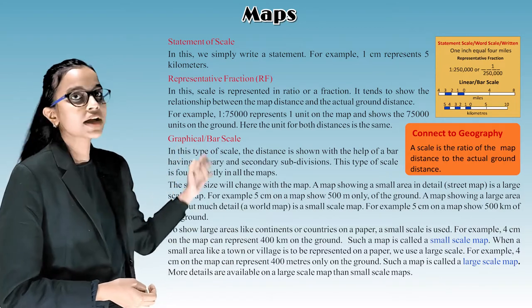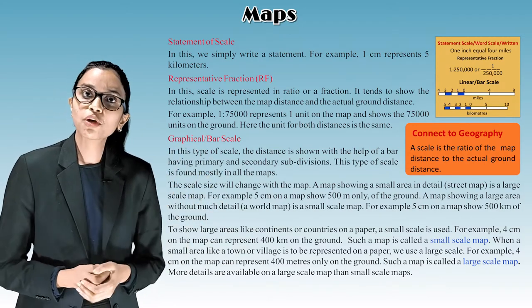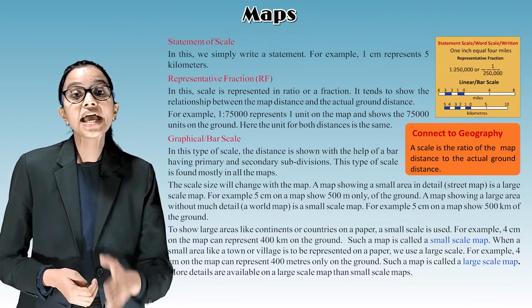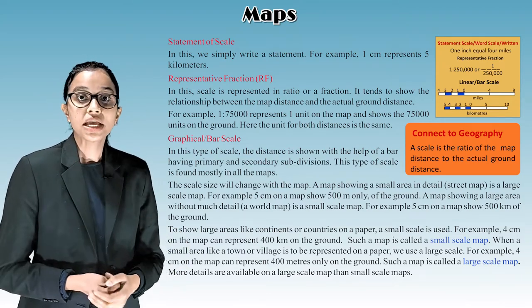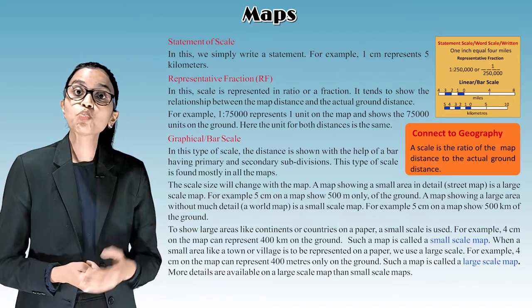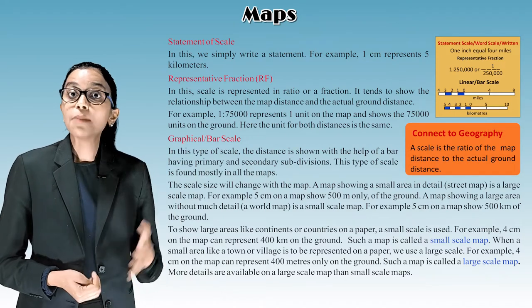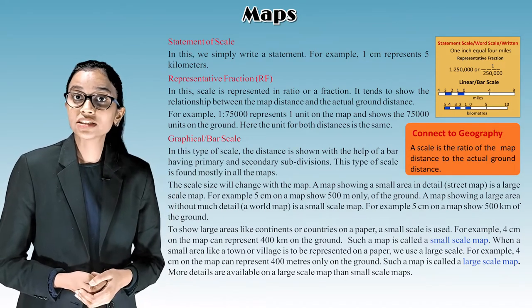Graphical Bar Scale. In this type of scale, the distance is shown with the help of a bar having primary and secondary subdivision. This type of scale is found mostly in all the maps. The scale size will change with the map.